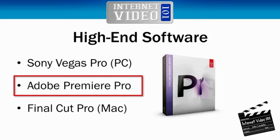I also wanted to do a lot of motion graphics. You've probably noticed at the beginning of each of the Internet Video 101 training videos there's a very short clip that introduces the video — that's done in a product called After Effects, another Adobe product. I also use Photoshop for all of my graphics production and photo editing. Adobe do some very nice suites, so I got what's called their Production Premium Suite, which included Photoshop, Premiere Pro, After Effects, and a whole bunch of other things. So Premiere Pro it is.